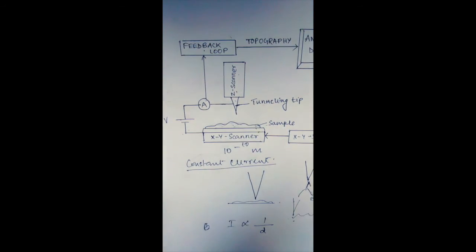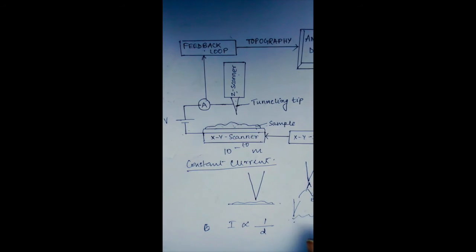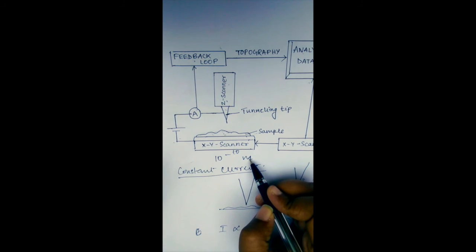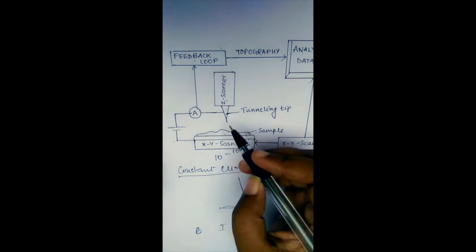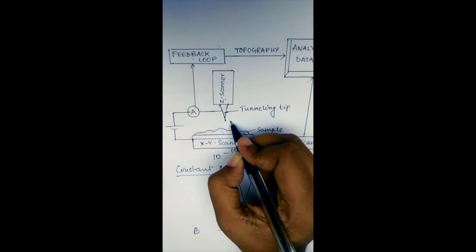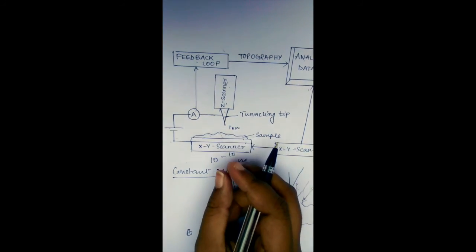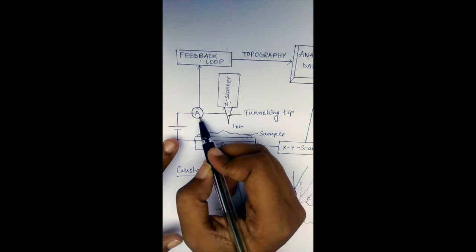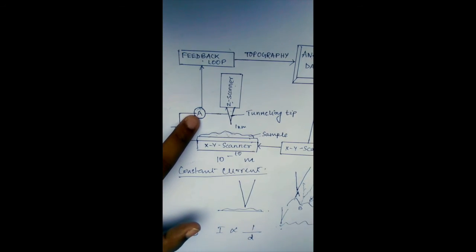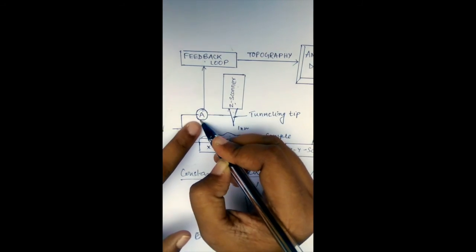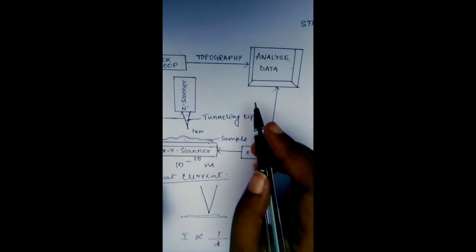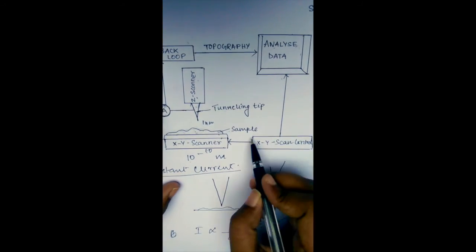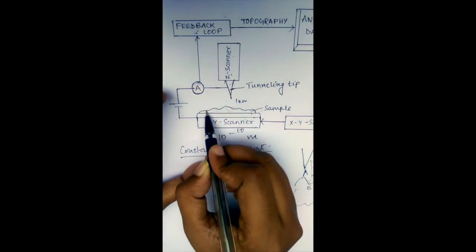The phenomenon of quantum tunneling is used here, and the sample must have a conducting surface. The tunneling tip is also very thin, on the order of 1 nanometer, so that the tunneling effect can take place. An amplifier is included because the current detected is usually very weak. The amplifier boosts the current and sends it to the feedback signal, and from there a computing device processes the data. This is the scanner on which the sample is scanned.